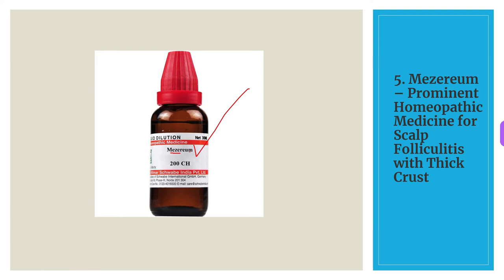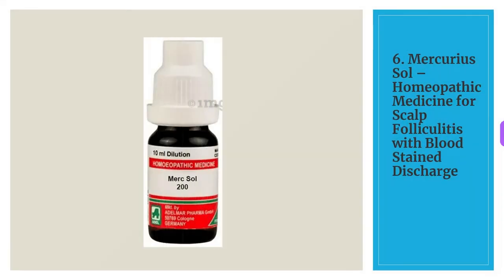The sixth medicine is Mercurius Sol. Mercurius Sol is an excellent homeopathic medicine for scalp folliculitis where the eruptions have an offensive, blood-stained discharge. There may be intense itching on the scalp, and in most cases symptoms get worsened at night.